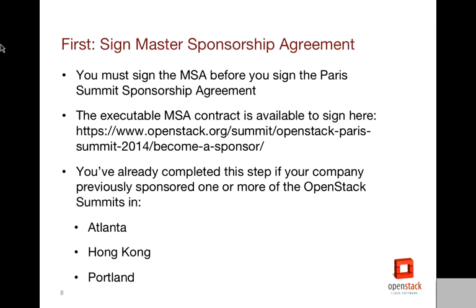To become a sponsor, there are two contracts to be signed. The first is the master sponsor agreement, available on our website as an electronic agreement. The link is provided on the slide. If you've sponsored any of the previous summits in Atlanta, Hong Kong, or Portland, then you've already done this step. You just need to know the date when you signed that contract, because that will be asked when you sign the Paris sponsorship contract.